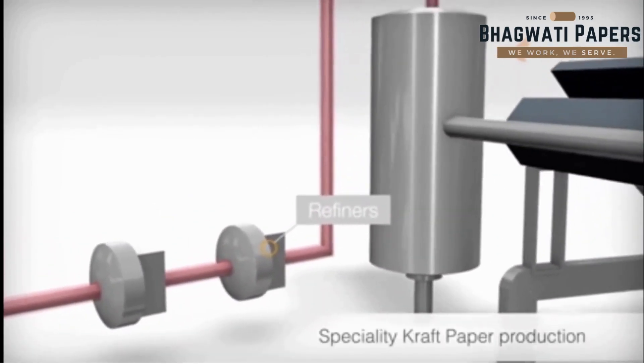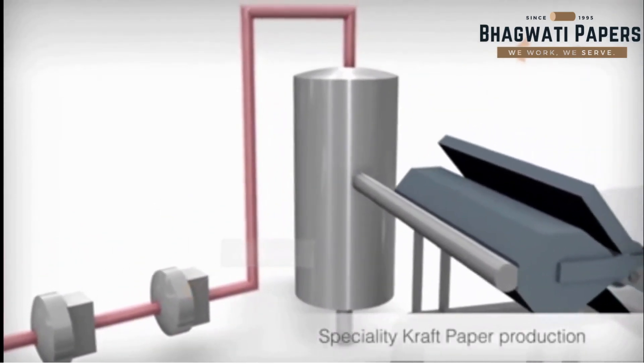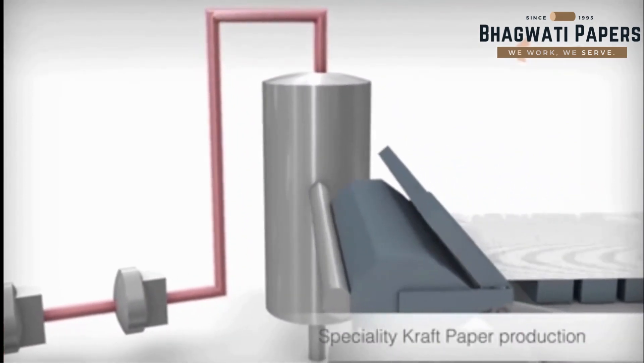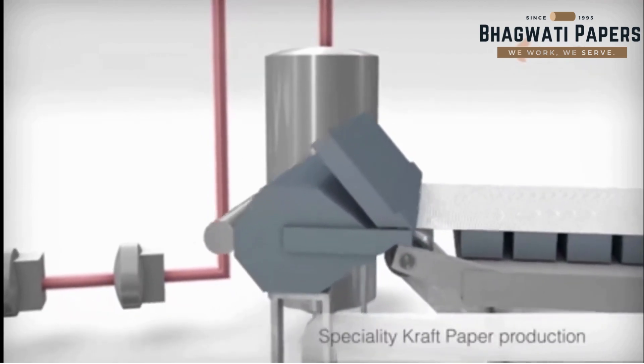Necessary chemicals are also added here. After screening and dilution, the highly diluted fiber solution passes through the head box to the wire section.